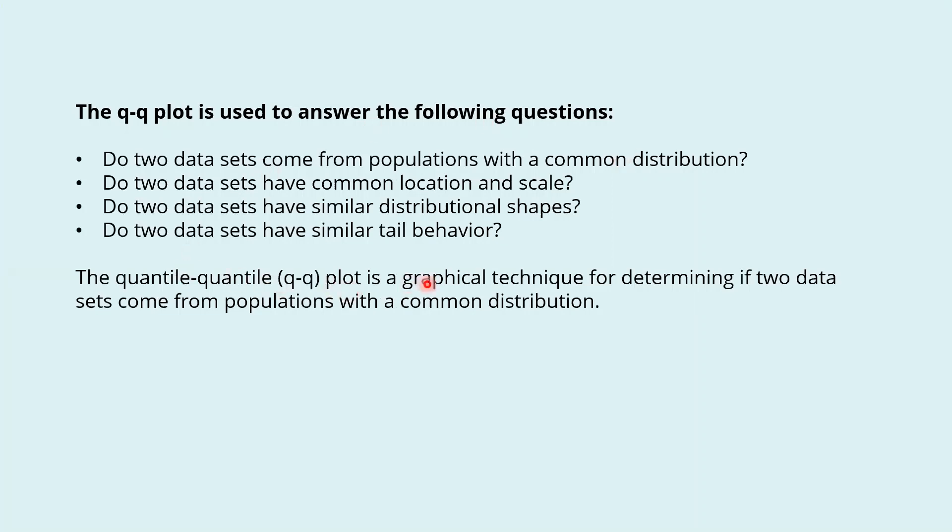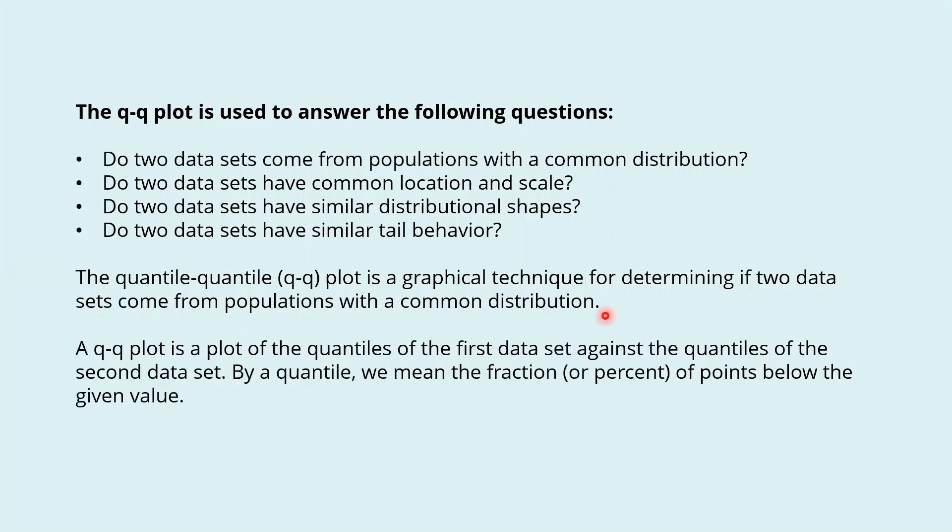The QQ plot is a graphical technique for determining if two data sets come from populations with a common distribution. A QQ plot is a plot of the quantiles of the first data set against the quantiles of the second data set. By a quantile, we mean the fraction of points below the given value.